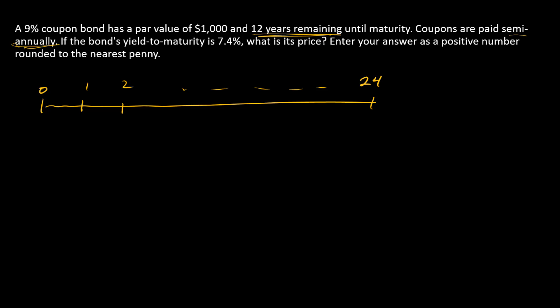Now going to the cash flows, let's start with the par value of the bond. Par value of the bond is $1,000, and that amount is going to be repaid at maturity, so that's going to be a single $1,000 cash flow at time 24, and then we have the coupon payments.